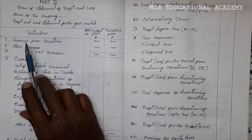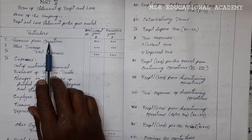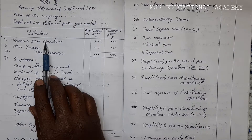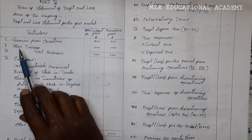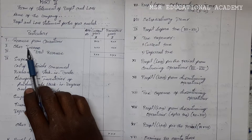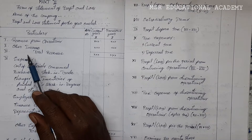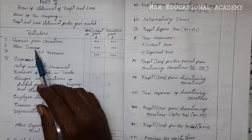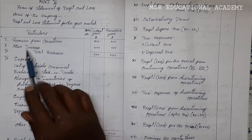Revenue from operations means income from the main source of the business comes under revenue from operations. Other than the main source, income from other natures comes under other income. Those types of incomes we should write under other income.